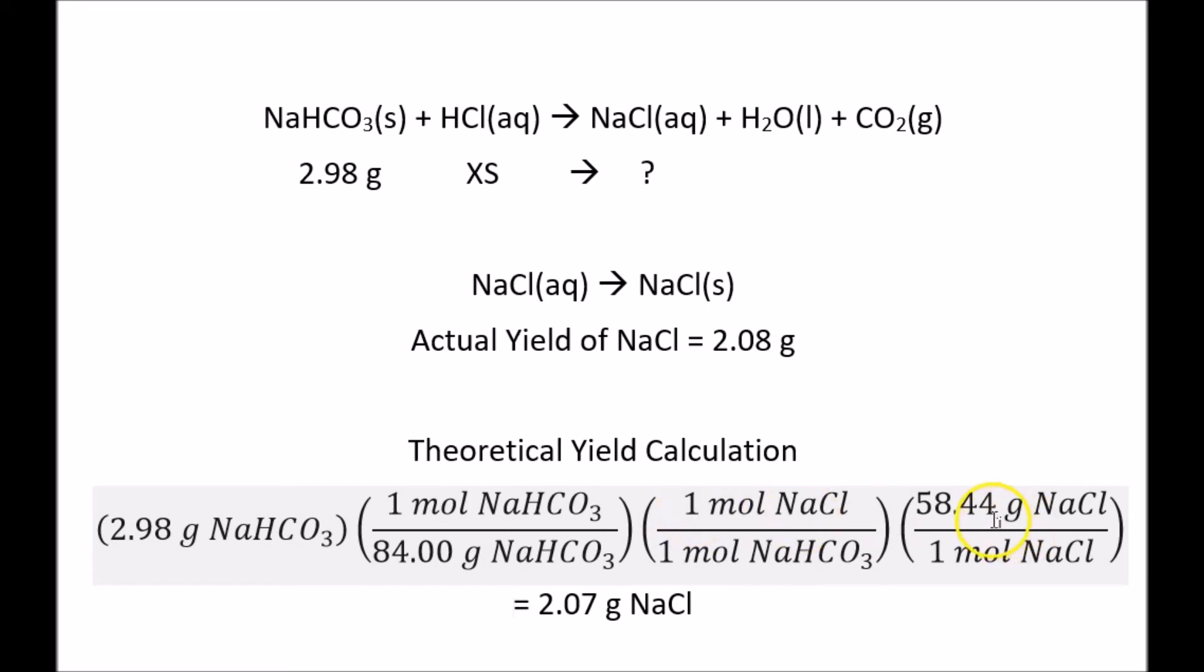Then we converted to grams of sodium chloride using the 58.44 gram molar mass. We got a result of 2.07 grams of sodium chloride, which is within error of the actual yield. So it is approximately a 100% yield.